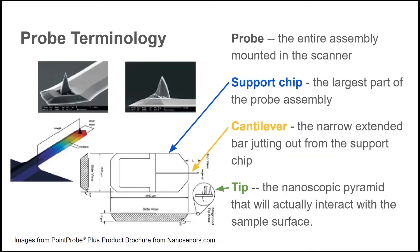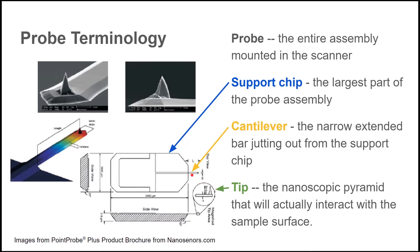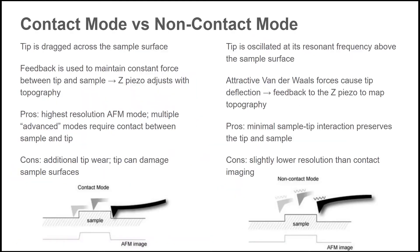Your job is to make sure the laser signal is correctly aligned on the probe and PSPD. The AFM probe is probably the single most important component in an AFM measurement. Probe refers to the entire assembly. The support chip is the largest part of the probe assembly. The cantilever is the narrow bar jutting out, and the tip is the actual part of the probe that touches the sample. Note in this SEM image that the tip is not at the very end of the cantilever.